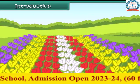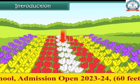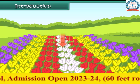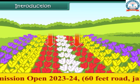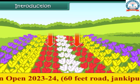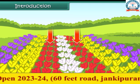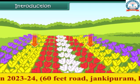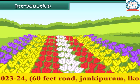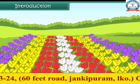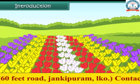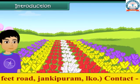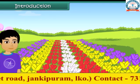The white tulips are at the center. On either side, there are red tulips. Beyond the red tulips are the yellow ones, followed by the purple tulips.